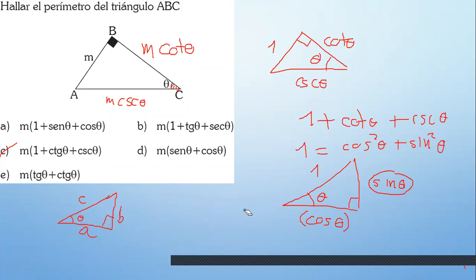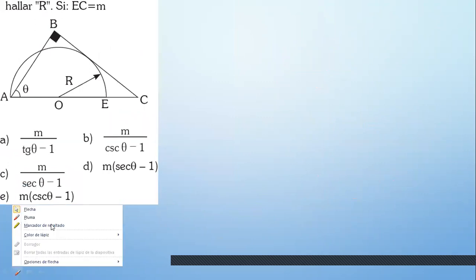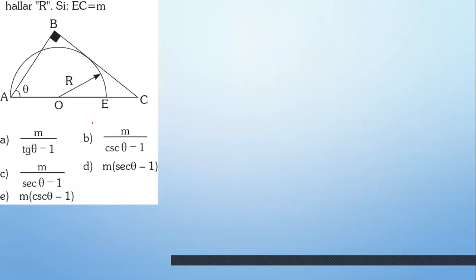En la trigonometría y la geometría hablan de la misma cosa, solo que con diferentes notaciones. En la geometría uno diría que es más fácil porque no ves seno, coseno, tangente. En realidad es solamente otra forma de hablar.